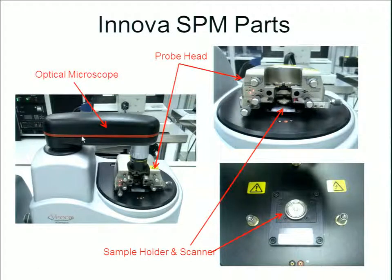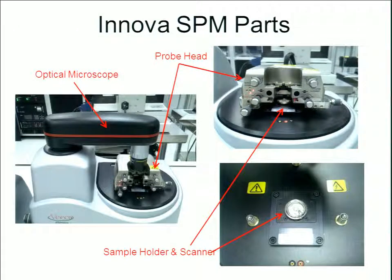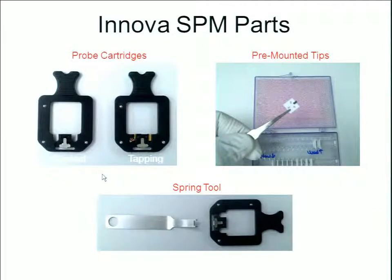Looking more closely at the instrument, we see the optical microscope. Below this is the probe head, which will hold our cantilever and tip. Below the probe head is the top of our piezoelectric scanner, and just above that is a magnetized metal plate for holding our samples. If you've wondered how you hold a cantilever that's so small — with a tip that goes down to 20 nanometers — one way is that they come packaged on a tiny chip of silicon.